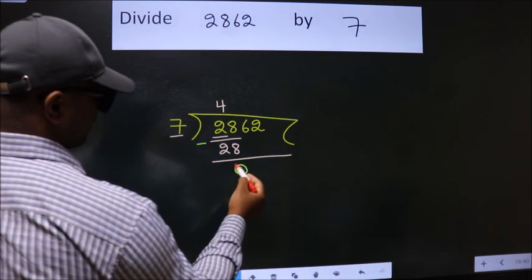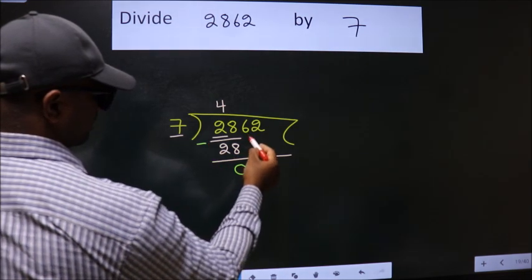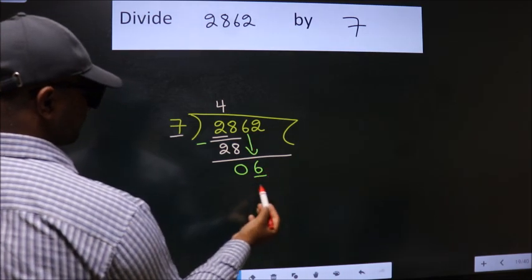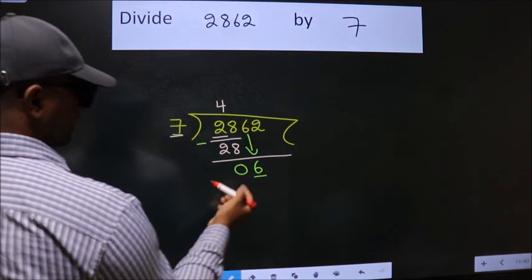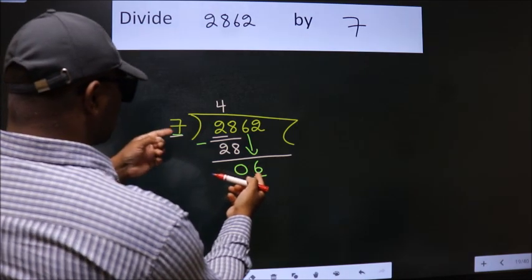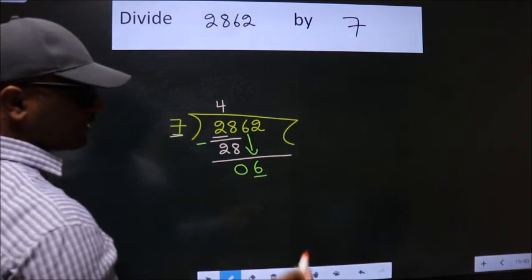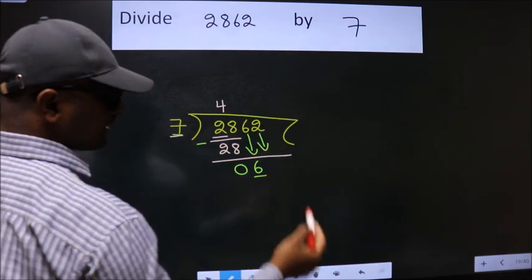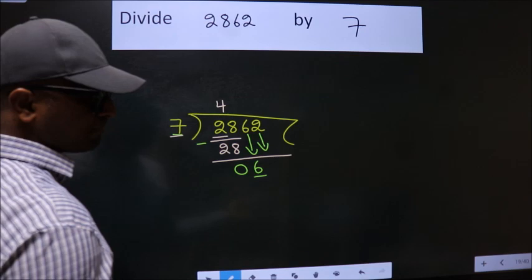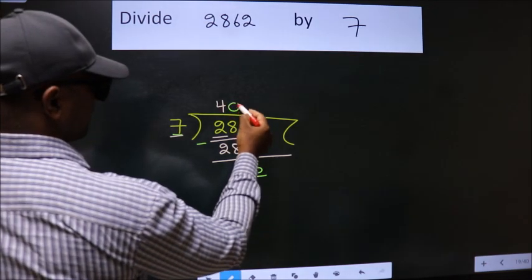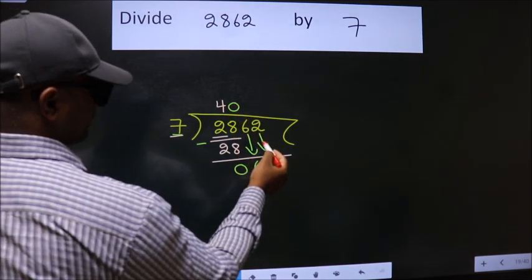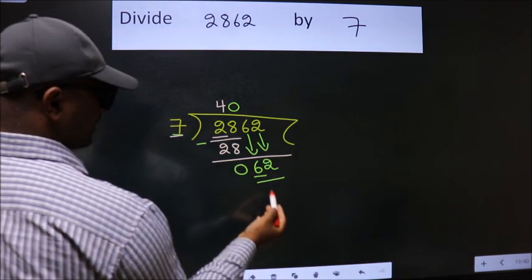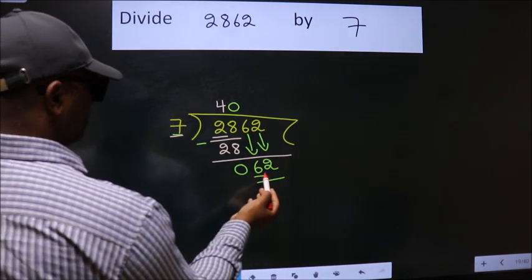After this, bring down the next number. So 6 comes down here. We have 6 here. 6 is smaller than 7, so we should bring down the second number. The rule to bring down the second number is to put zero here. Then we can bring down this number to get 62. A number close to 62 in the seven table is...